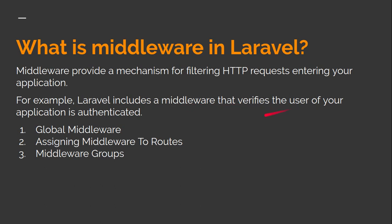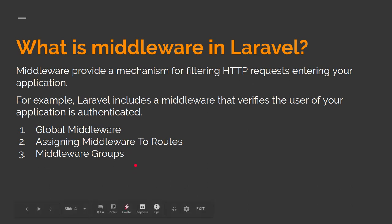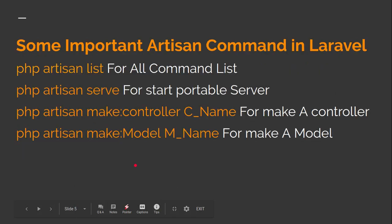Middleware is used to verify users in your application for authentication. There are actually three types of middleware: global middleware, which applies to all routes; route middleware, which can be assigned to a particular route; and group middleware, which is assigned to a group of routes.